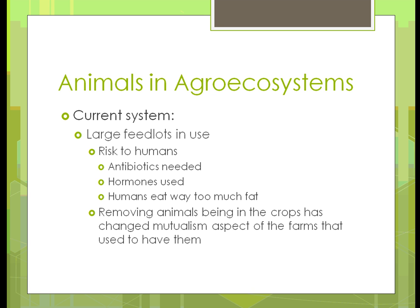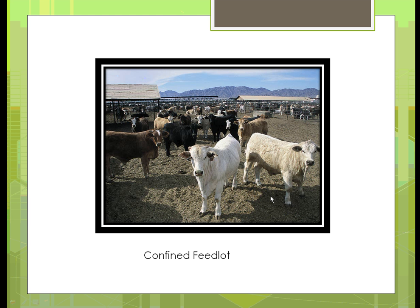Removing animals has basically changed the mutualism aspect of farms that used to have them. We covered mutualism in Units 8 and 9 — basically, mutualism is two organisms that work together to each other's benefit. In this case, animals would be eating the grasses, the grasses would benefit by growing better, the pastures would be fertilized more, and the animals would get their nutrition from that instead of corn and soybeans.